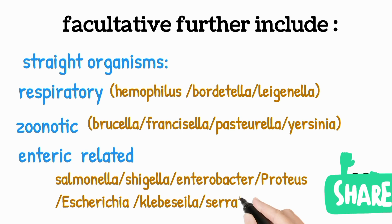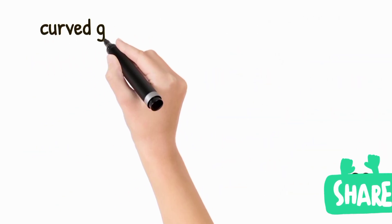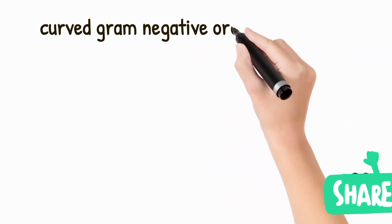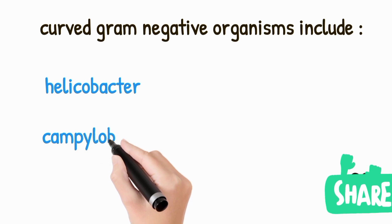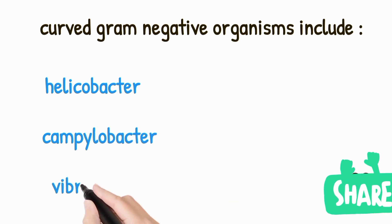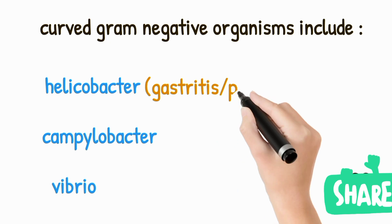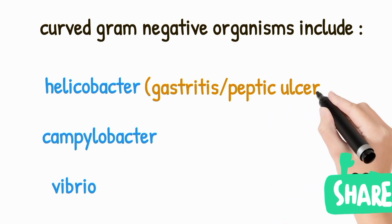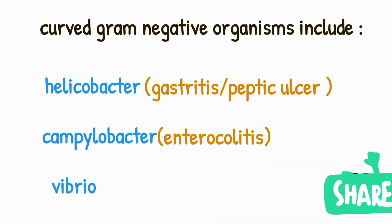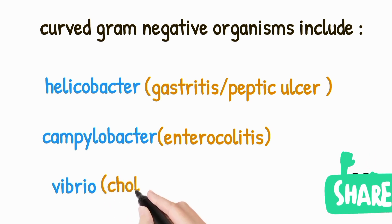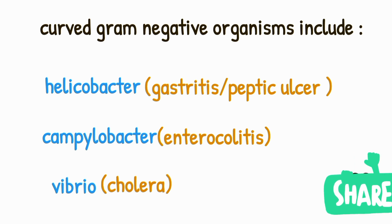Curved gram negative organisms include Helicobacter, Campylobacter, and Vibrio. Helicobacter pylori causes gastritis and peptic ulcer disease. Campylobacter causes enterocolitis, which is a gastrointestinal tract infection. Vibrio cholerae causes cholera, which is a form of severe watery diarrhea.